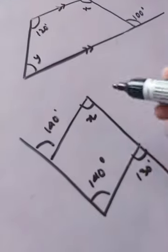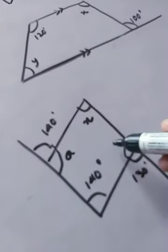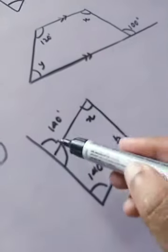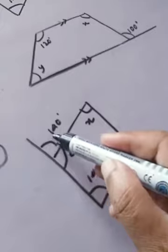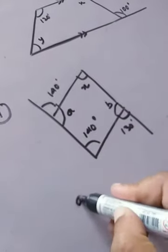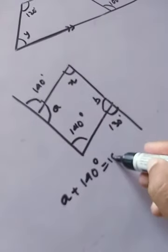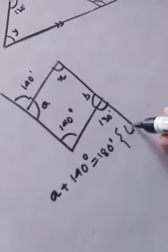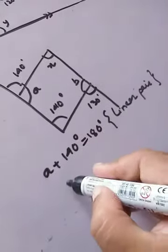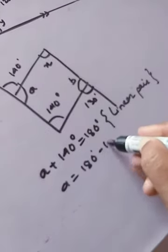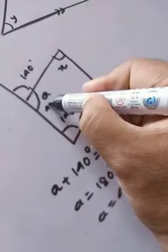So how exactly can we do this? Two exterior angles are given. If I take this as angle a and this as angle b, these two angles are adjacent to each other. Since this line is a straight line, these two angles form a linear pair. So: a + 140° = 180° (linear pair). Transposing, a = 180° − 140° = 40°.